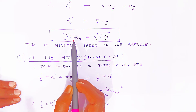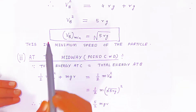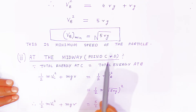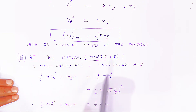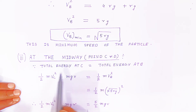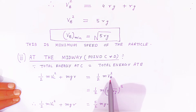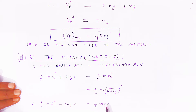Now we find the velocity at point C. By conservation of energy, total energy at C equals total energy at B. Total energy at C is ½Mv²_C + MgR, which equals the energy at B. Substituting the velocity at B (v_B = √(5Rg)), the energy at B is ½M(5Rg) = 5MgR/2. So: ½Mv²_C + MgR = 5MgR/2.